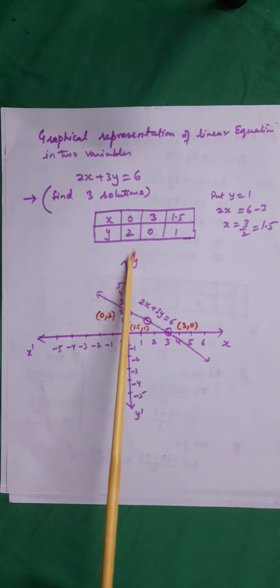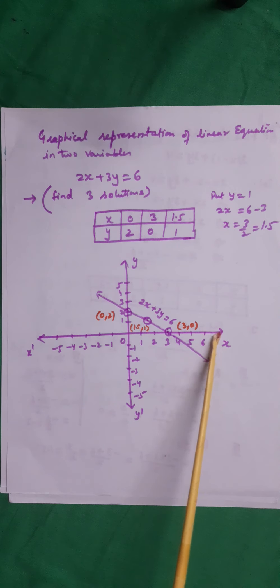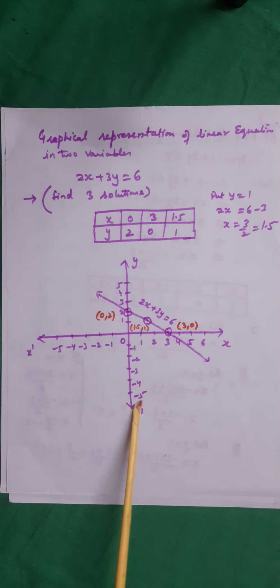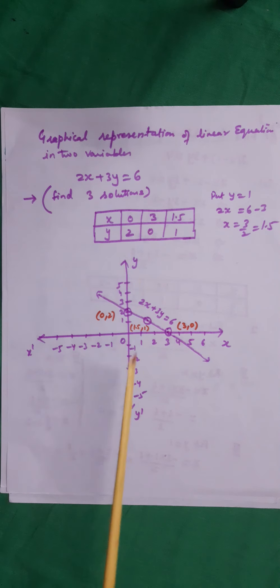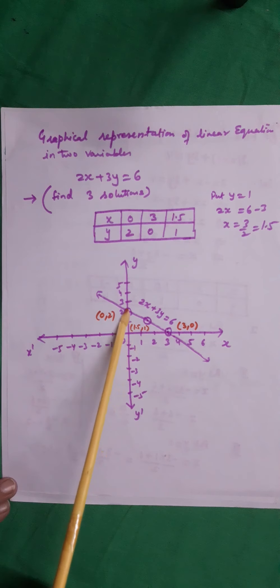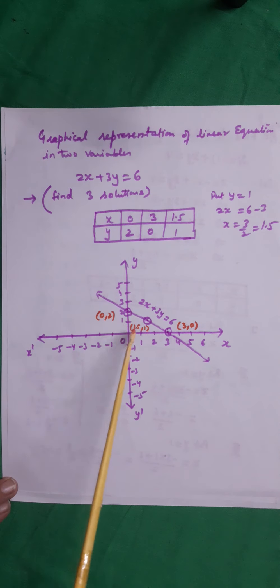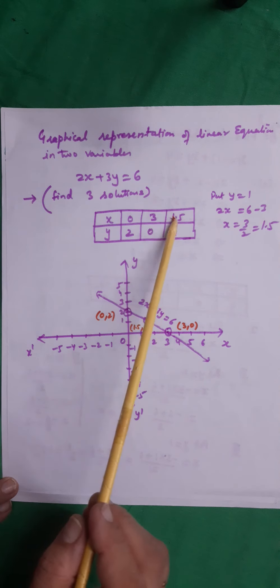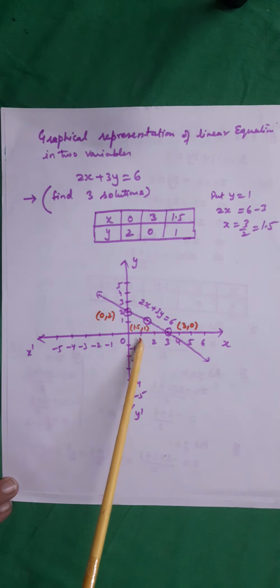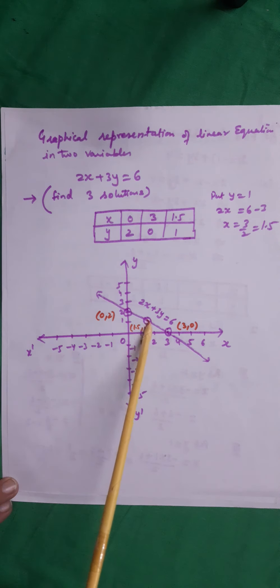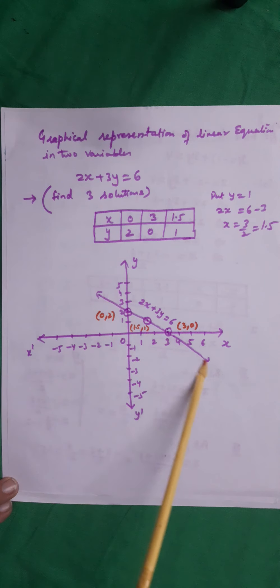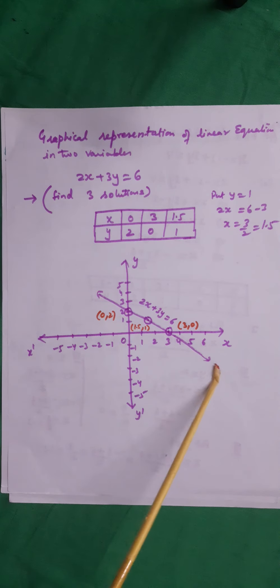Now to plot, draw the Cartesian plane with x-axis and y-axis and make all the markings. Plot the point (0, 2) on the y-axis, (3, 0) on the x-axis, and (1.5, 1) where x is 1.5 and y is 1. Join all these points and you notice you get a straight line.